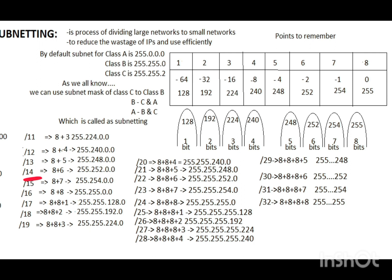Subnet mask value of slash 14 is 8 plus 6 bits. For 8 bits, 255; for 6 bits, 252. So slash 14 is 255.252.0.0. Slash 15 is 8 plus 7 bits. For 8 bits, 255; for 7 bits, 254. So the subnet mask value of slash 15 is 255.254.0.0.